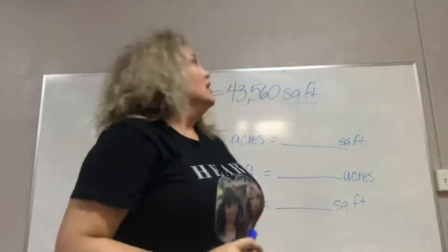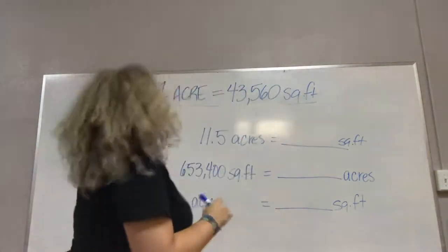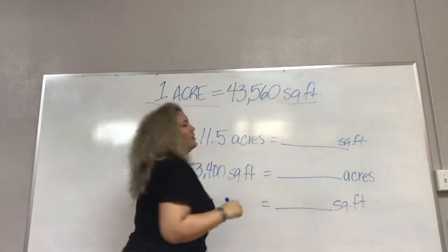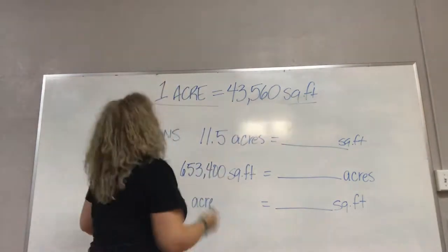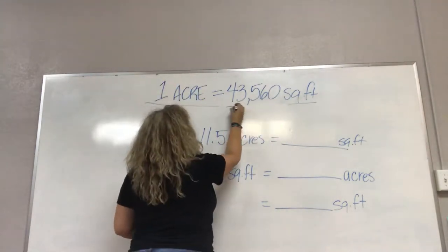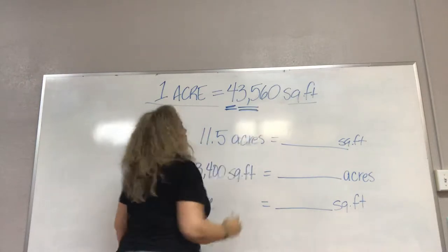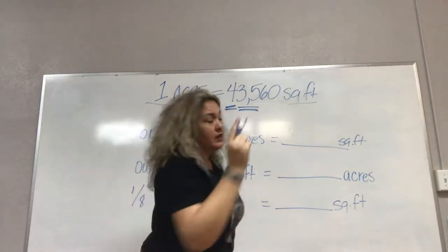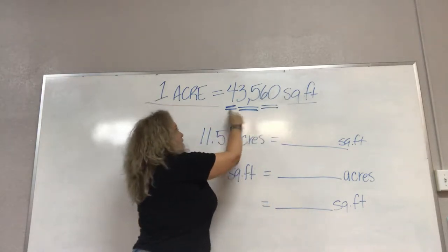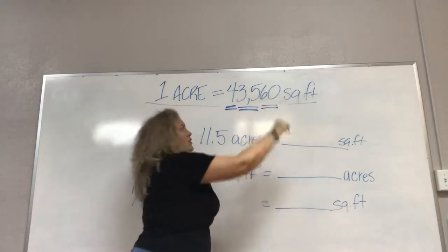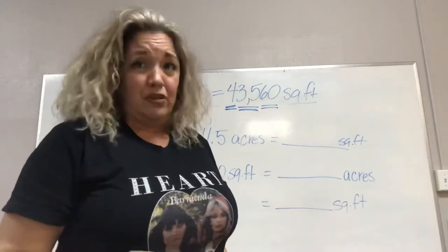Alright, so one acre. We need to remember this number: one acre equals 43,560 square feet. Here's how we can remember that number: four little old ladies on I-35 going an annoying 60 miles per hour. Four old ladies on I-35 going 60 miles per hour: 43,560. You got to memorize it. You're going to be using it the rest of your sales life.